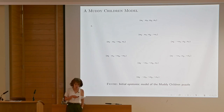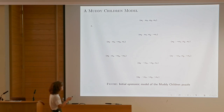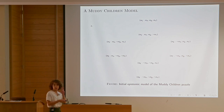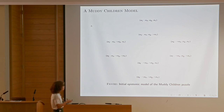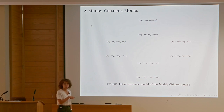This is the epistemic logic modeling of this situation. Starting with complete uncertainty, we have all possibilities. With three kids A, B, C, all of them muddy here and all non-muddy there — 'not M_A' means A is not muddy — and all other possibilities: eight of them, two to the third.